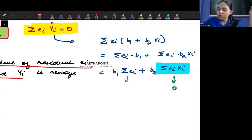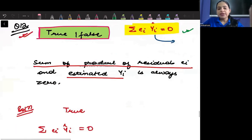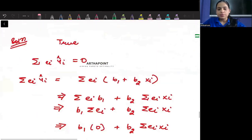And we've also proved that sum of the error terms is zero. So this will be zero. So this is a true statement - this is going to be zero.